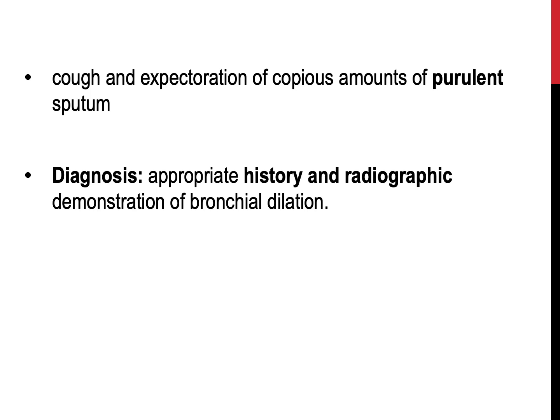Clinically, the characteristic symptom complex is dominated by cough and expectoration of copious amounts of purulent sputum. Purulent sputum usually contains white blood cells, cellular debris, dead tissue, and mucus. It is typically yellow or green in color and can be seen in cases of bronchiectasis and lung abscess. The diagnosis of bronchiectasis depends on an appropriate history and radiographic demonstration of the bronchial dilation.